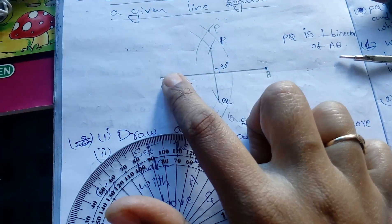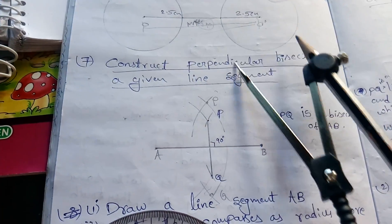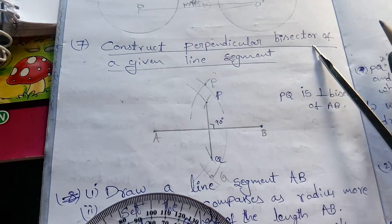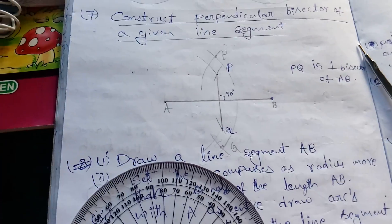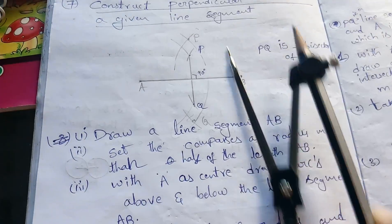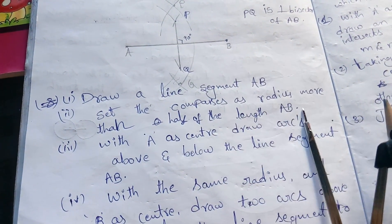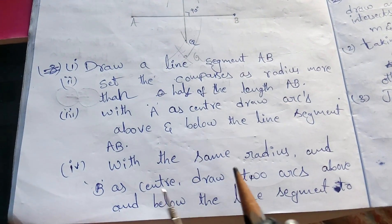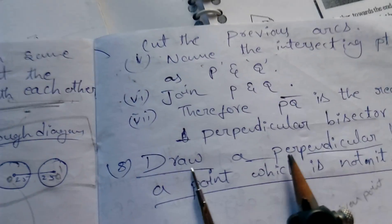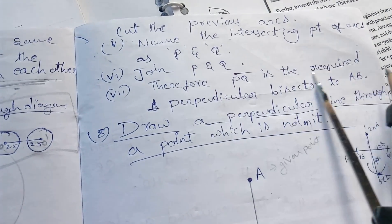This line exactly cuts segment AB at its midpoint. Perpendicular means 90 degrees; bisector means it divides the line segment into two equal parts. The steps are: draw line segment AB, set the compass to a radius more than half of AB, with A as center draw arcs above and below, then with the same radius and B as center draw two arcs above and below to cut the previous arcs. Name the intersecting points P and Q, then join PQ. Therefore PQ is the required perpendicular bisector of AB.